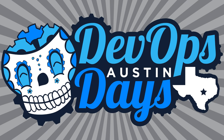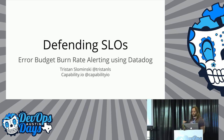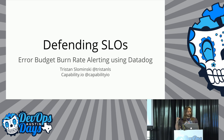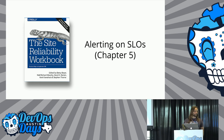I take it as a given that you want SLOs and want to alert on them — that's an assumption I'm going to make. If that is not the case, I'm happy to discuss more in detail in the open space following the talk. Due to time constraints, this introduction will provide a whirlwind overview for some context, but the slides are available for reference. First, I'm going to give an overview of alerting on SLOs according to the Site Reliability Workbook, Chapter 5.